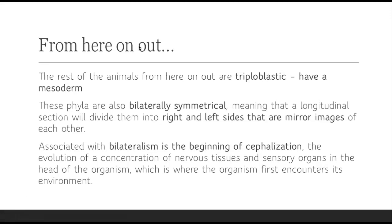From here on out, everything — all the rest of the animals we look at — are going to be triploblasts, meaning they have an endo, an ecto, and now a mesoderm. Before, there was going to be only an endo and an ecto. Now we have the mesoderm. These phyla are also going to be bilaterally symmetrical, meaning that if you cut it right down the middle, it'll divide them into a right and a left side — mirror images of each other, like us.